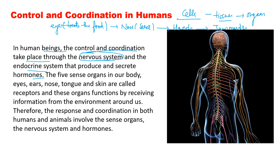We all know that we have five sense organs in our body: eyes, ears, nose, tongue, and skin. We call these sense organs receptors because they help us in receiving information from the environment around us. The response and coordination in both humans and animals involve the sense organs. So the whole mechanism involves sense organs, the nervous system, and the endocrine system, which together bring control and coordination.